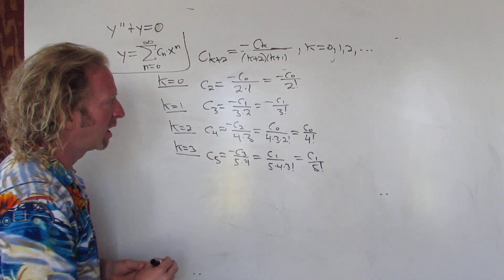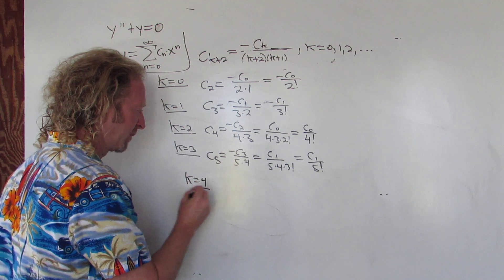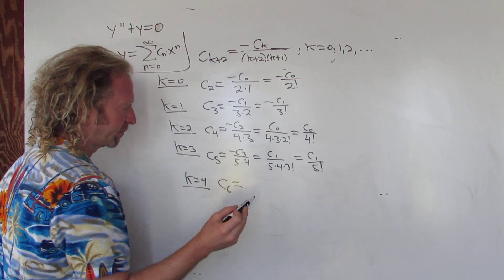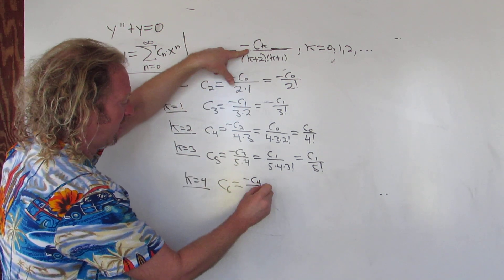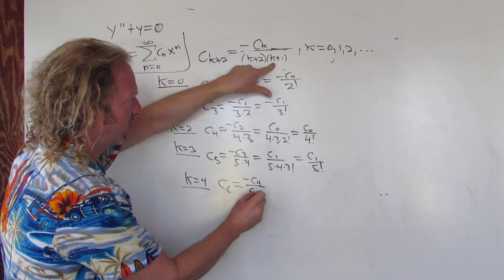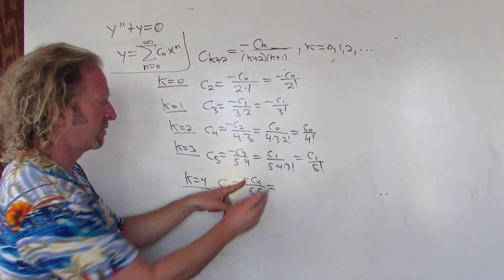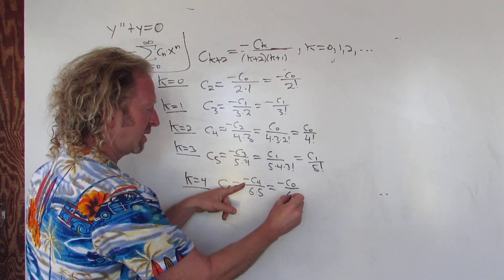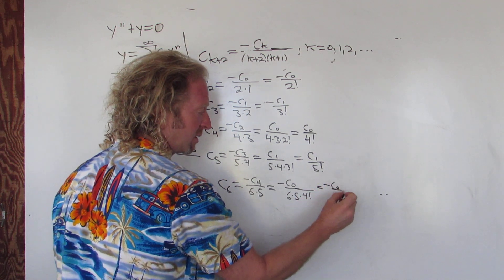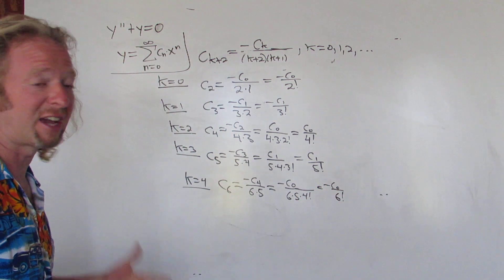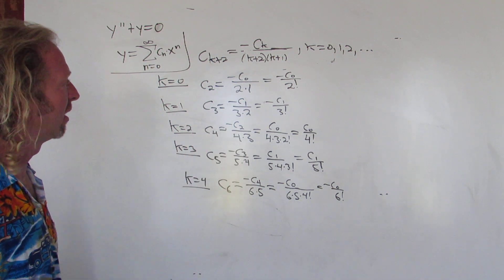Let's do one more. When k equals 4, we get c sub 6. That gives negative c sub 4 over 6 times 5. c sub 4 is already positive c sub 0 over 4 factorial, so it's going to be negative c sub 0 over 6 times 5 times 4 factorial — that's 6 factorial. So c sub 6 equals negative c sub 0 over 6 factorial. You have to think really hard; it's easy to mess up.